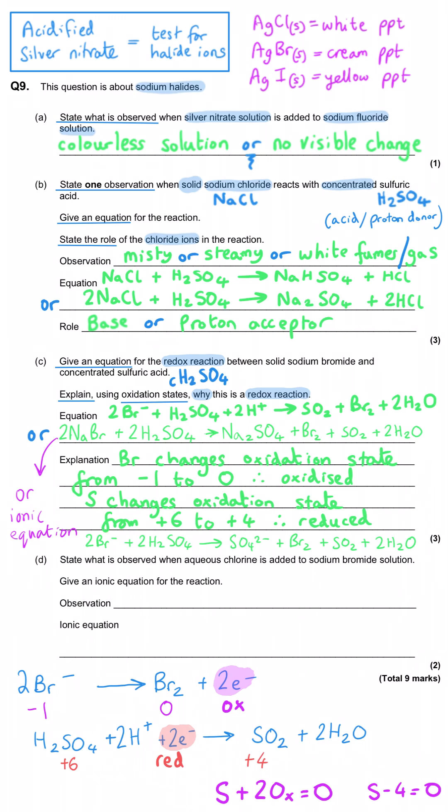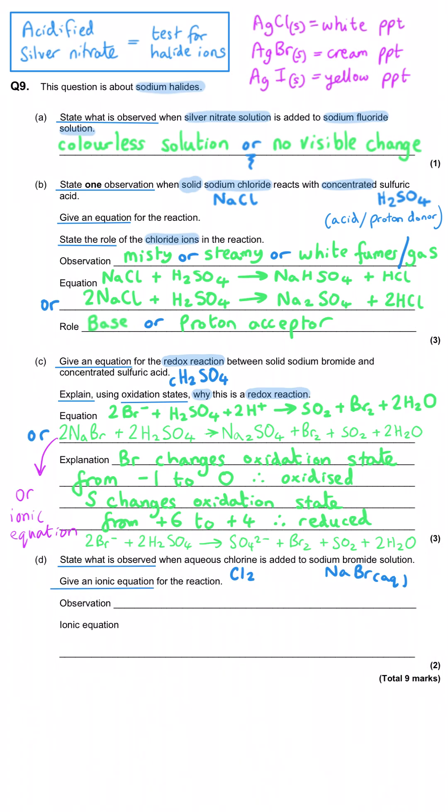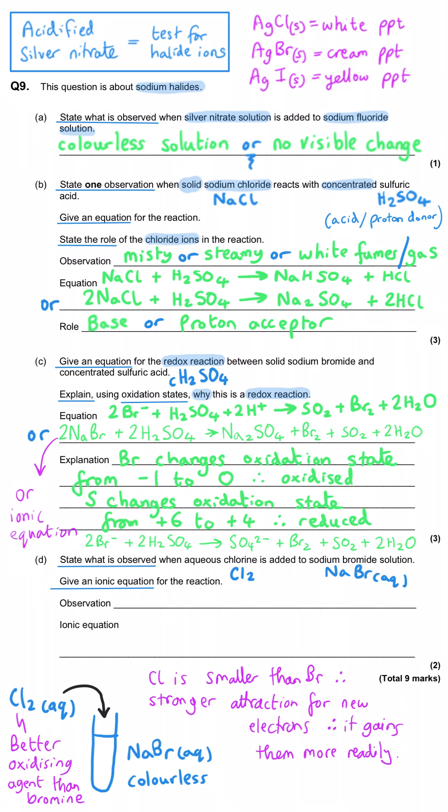And last of all in part D, state what is observed when aqueous chlorine is added to sodium bromide solution. And so this is the displacement reaction equation, where we're proving the oxidizing ability of the halogens. And chlorine is a better oxidizing agent than bromine. And so that means that chlorine can displace bromide from sodium bromide solution. And so what we see happening is the formation of the bromine. And the bromine is a yellow or an orange solution. We mustn't say brown.